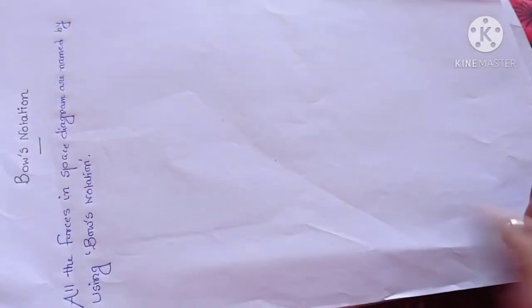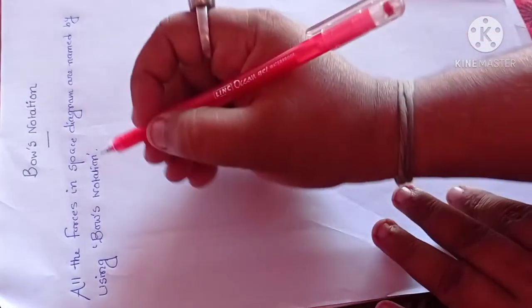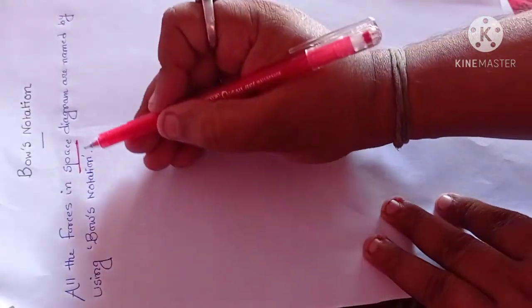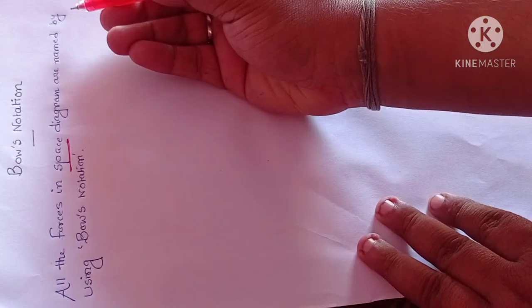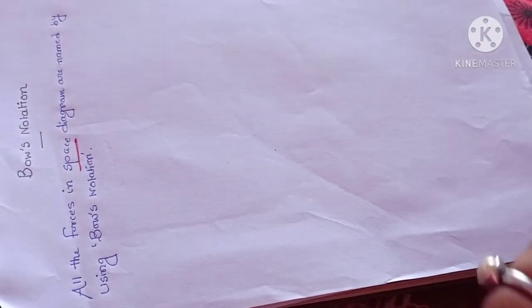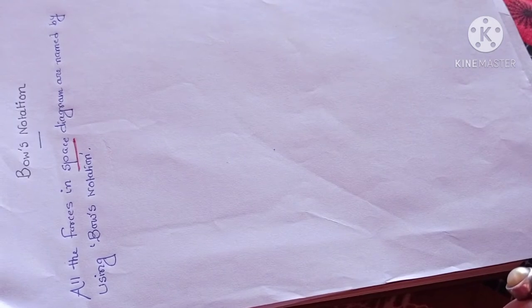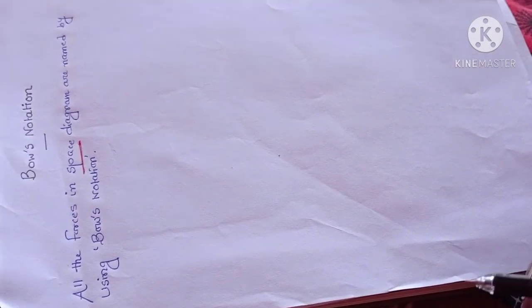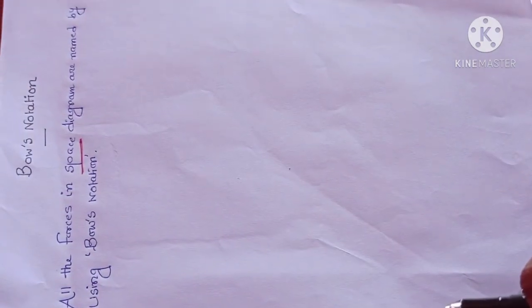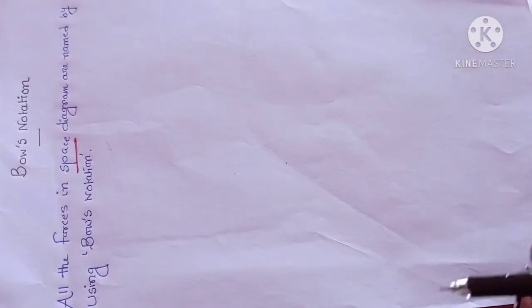Bow's notation is defined as all the forces lying in the space diagram are named by using Bow's notation. It's a convenient method in which each force or load is named by two capital letters placed on either side in the space diagram.